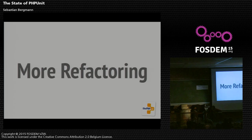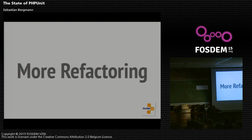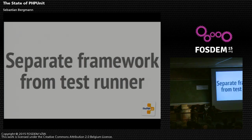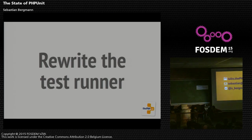I'm discussing these refactorings — especially around the test runner — with Konstantin, Kieran, and others who work on PHPSpec, Behat, and other test frameworks. It might be that we write a shared test runner foundation used by PHPUnit, PHPSpec, and Behat, so we don't each have to individually deal with parallelization and distribution. So far we've only talked about it, but hopefully soon we start working on it. The goals: separate the framework from the test runner, then rewrite the test runner.